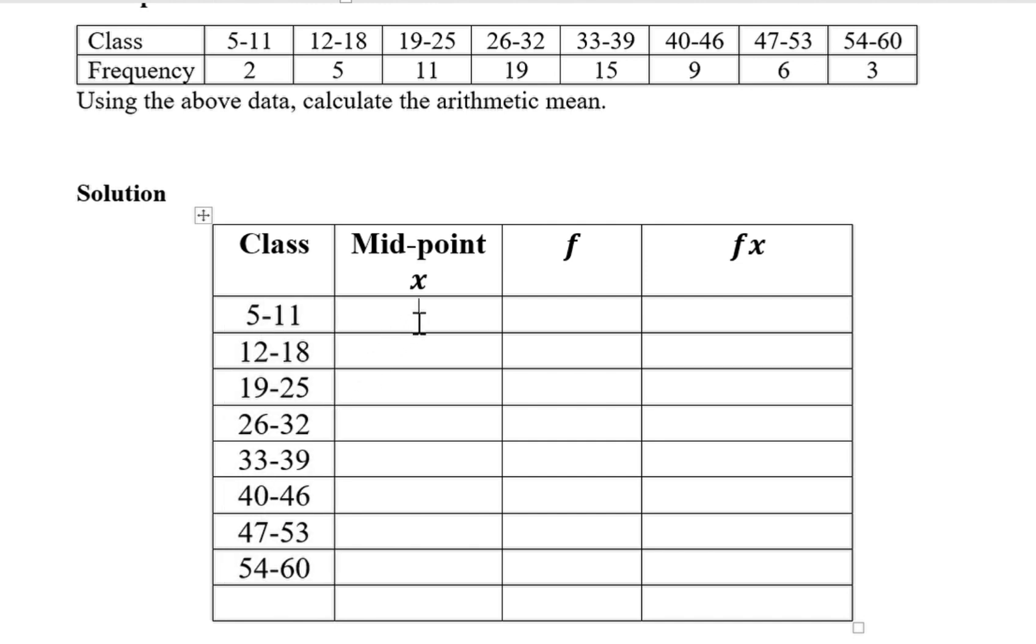Then the first thing we calculate is the midpoint x. How do we calculate it? You take this value plus this one divided by 2. 5 plus 11 gives us 16, divided by 2 gives us 8. 12 plus 18 is 30, divided by 2 gives us 15. The rest are also done in that manner. 19 plus 25 divided by 2 gives us 22 and the rest are done similarly.